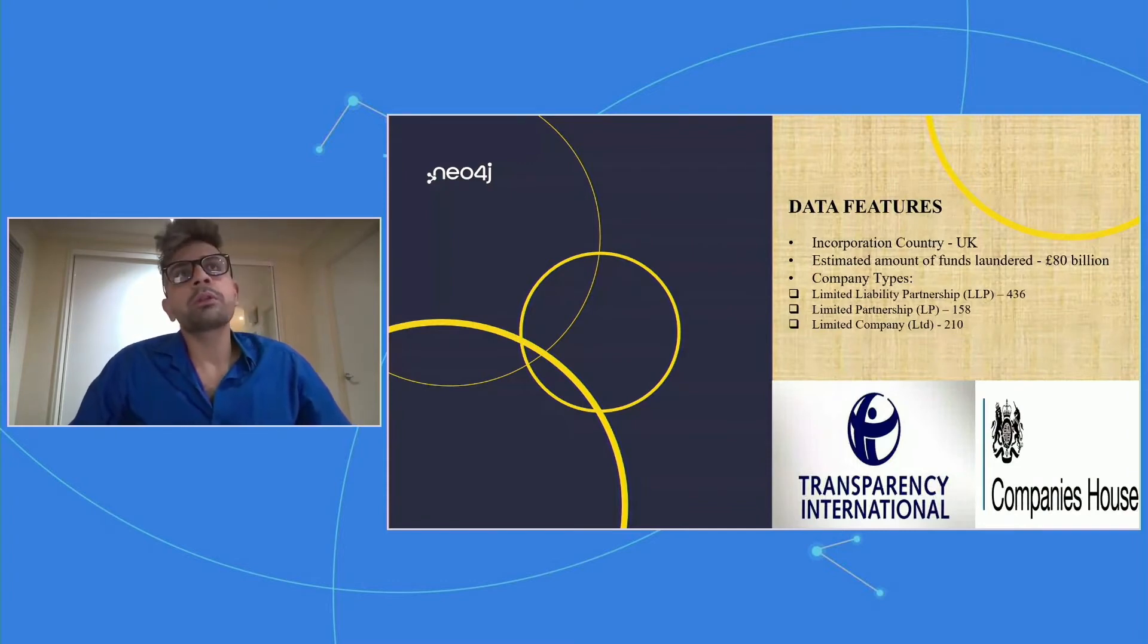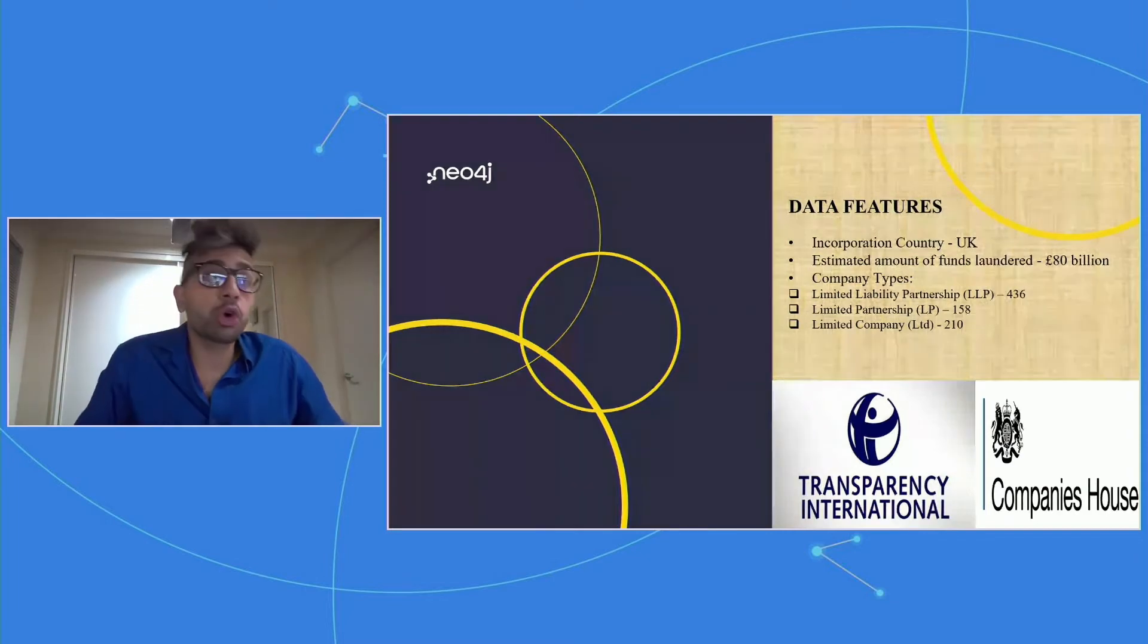UK was one of the first countries in the world to come up with a public register of ownership for companies. However, it was identified to be involved with incorporation of shell companies which were used for laundering 80 billion pounds.